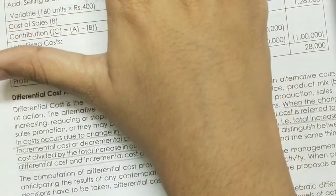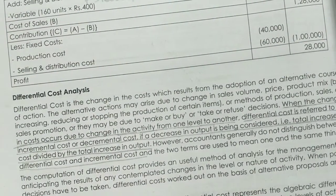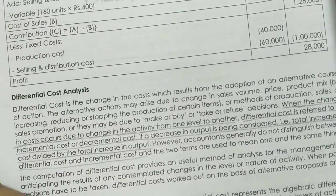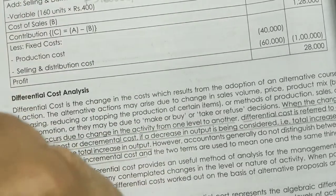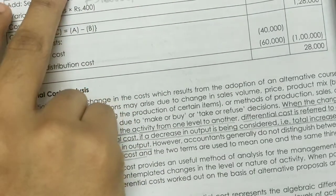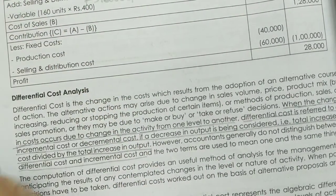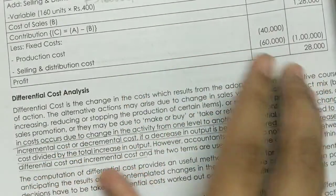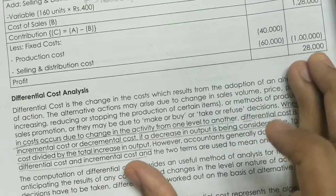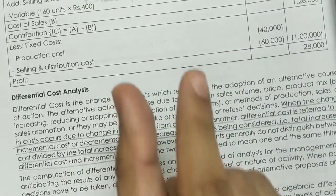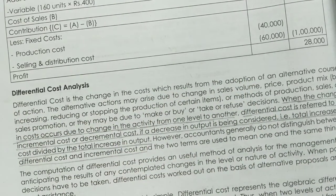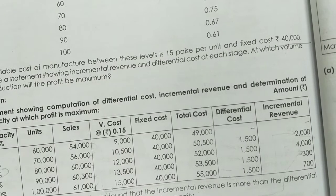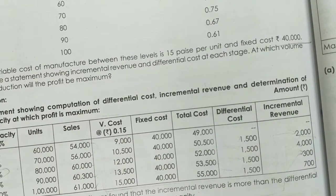Now let's take the question. At 60% capacity we have a variable cost of 9,000. At 70% capacity we have a variable cost of 10,500. So as we move to each level, the incremental cost is the difference between consecutive total costs. The incremental revenue is the difference in sales between consecutive levels.